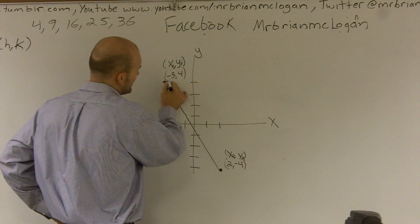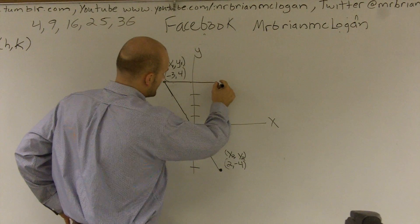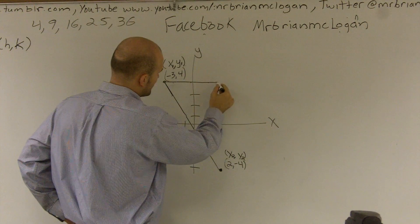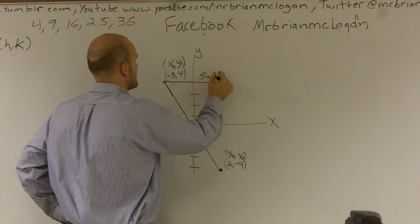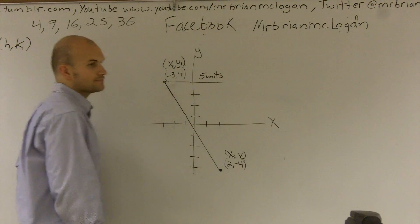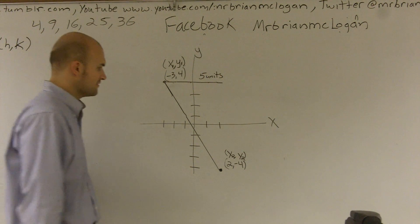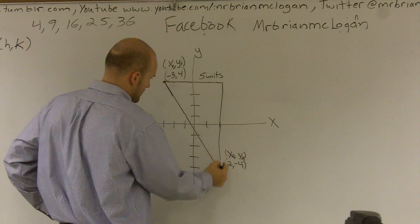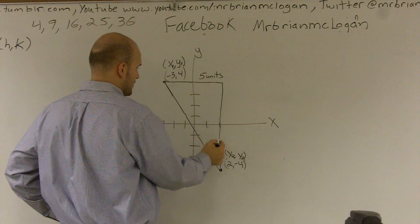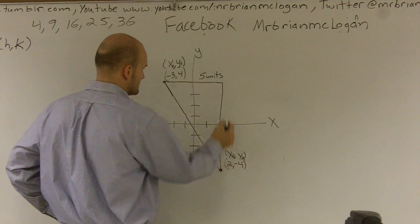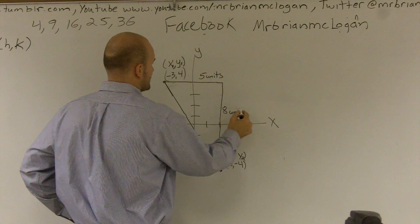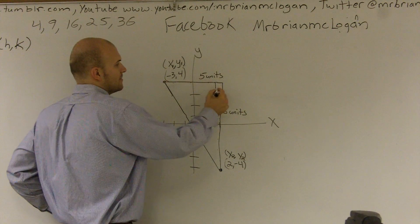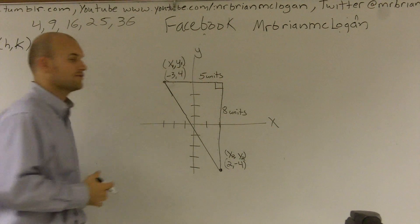So one thing we can do is we can kind of make a triangle. How far did I go over? Well, from here I went over one, two, three, four, five units. So I went over five units, and then I also went down one, two, three, four, five, six, seven, eight. Eight units. And now I created, by going horizontally and vertically, I created a right angle.